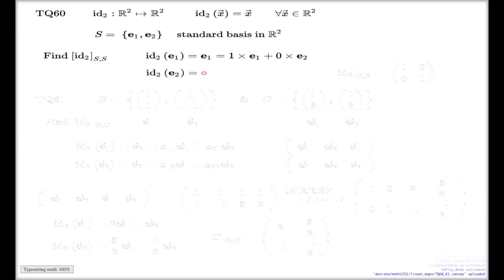Same story for e₂. When I apply identity to e₂, it will be e₂ again, and the representation of e₂ as a linear combination of e₁ and e₂ is like this. If I take these coefficients as columns, that will be the matrix we're looking for. This matrix, and that is the identity matrix.